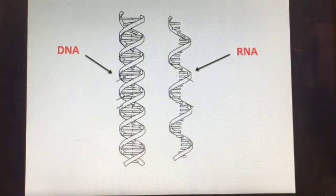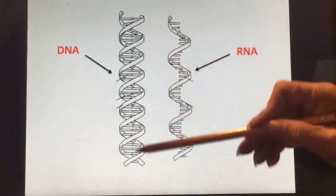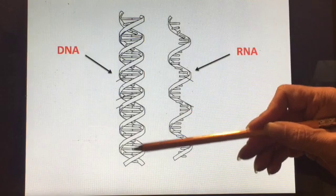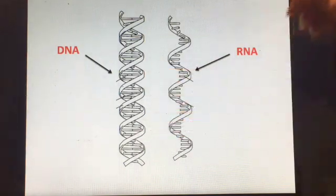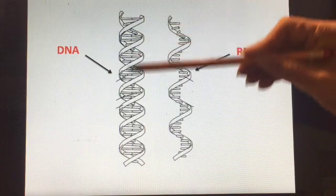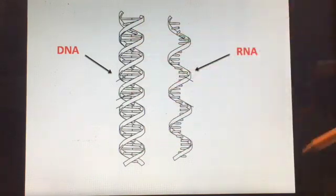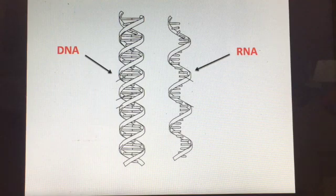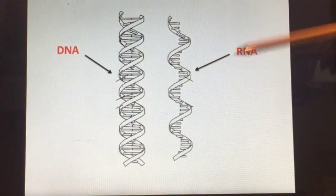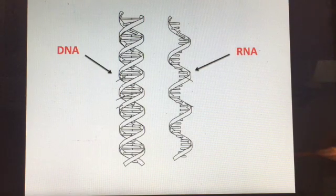It is the sequence of nitrogen bases in the nucleotides that determines the order of the amino acids in the protein. DNA can be thought of as the recipes for all of our proteins. We will have an entire unit second semester on how the cell uses the information in DNA to make RNA and then eventually to make proteins.